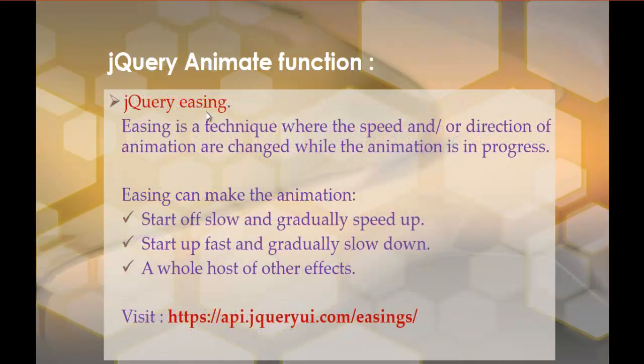Here comes jQuery easing. So what do you mean by easing? It's a technique where the speed or the direction of animation are changed while the animation is in progress. What easing can do is it can start off your animation very slowly and gradually speed up, or it can be vice versa — start very fast and gradually slow down. Easing has a set of values, and if you want to know those values, you can hit this URL.